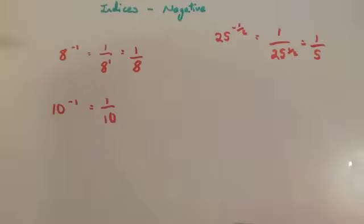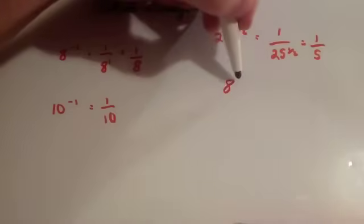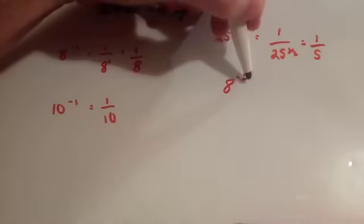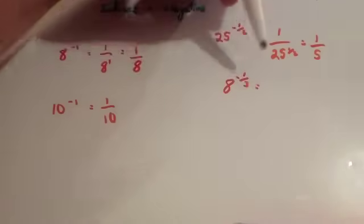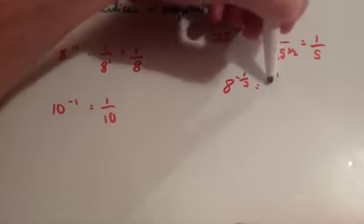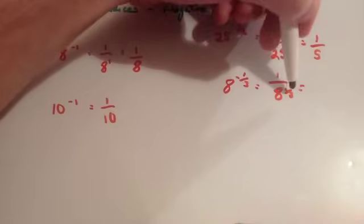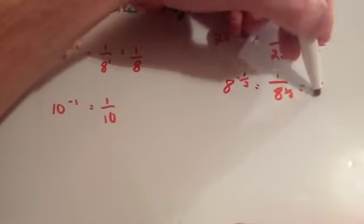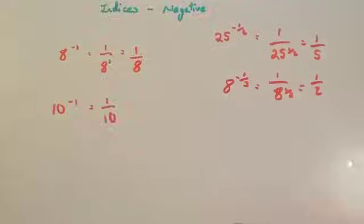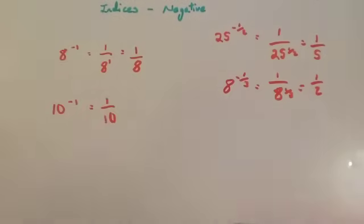It also works with other powers. For instance, 8 to the power of minus one third would be 1 over 8 to the power of one third. And the cube root of 8 is 2, so it would be 1 over 2. For these, remember to watch the video on fractional indices.